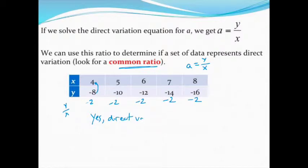If I want to go one step further, I can even say that I know the constant of variation. The constant of variation is that number that you found, which in this case is negative 2. And if I want to go even one step further than that, I could say if I want to write the equation of this, I know it's going to be y equals negative 2 times x is the equation.